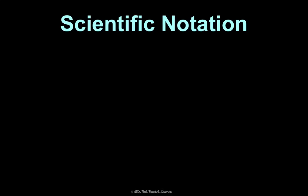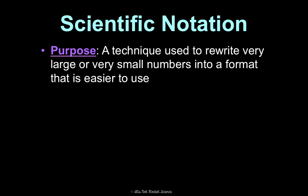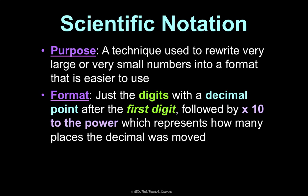The last math skill we need to practice is scientific notation. So the purpose of this is we're going to rewrite really large or really small numbers into a format that just makes it easier to use and see and work with. And that format is just the digits with a decimal point after the first digit, followed by times 10 to the power, which represents how many places the decimal was moved. So that is a lot of words for something that's a lot simpler if you just look at it. For example, 50,500 is kind of a decently large number. I would write it as the first digit, which is 5, and then a decimal point with the other digits times 10 to the 4th.